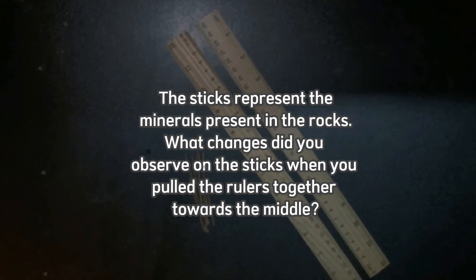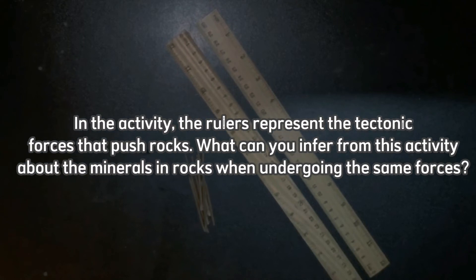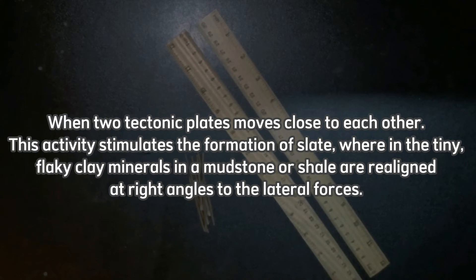Guide questions. The sticks represent the minerals present in the rock. What changes did you observe on the sticks when you pulled the rulers together towards the middle? The sticks were forced to align between the two moving rulers. In the activity, the rulers represent the tectonic forces that push rocks. What can you infer about the minerals and rocks when undergoing the same forces? When two tectonic plates move close to each other, this activity simulates the formation of slate, wherein the tiny flaky clay minerals in a mudstone or shale are realigned at right angles to the lateral forces.